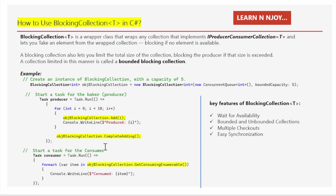Now I need to start a task for the Consumer. I have written another Task: TaskConsumer = Task.Run(...) and here I have a foreach loop — foreach (var item in objBlockingCollection.GetConsumingEnumerable()). This loop iterates over the items in the blocking collection, blocking and waiting if the collection is empty, and resuming when an item becomes available.